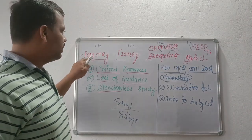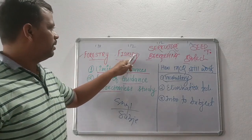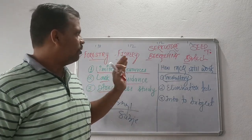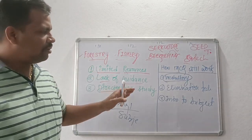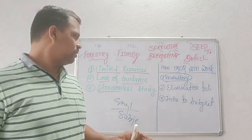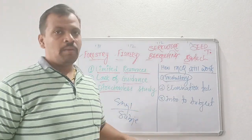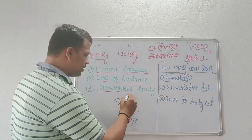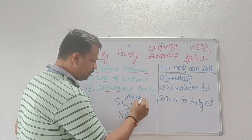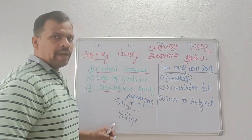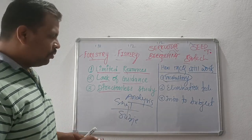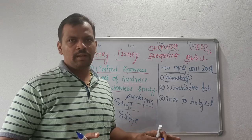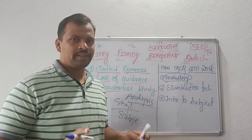An agriculture graduate doesn't know much about forestry or fishery, and likewise a forestry graduate doesn't know much about fishery. So if you solve multiple choice questions, your vocabulary starts to build up. When you solve MCQs, don't stop there — analyze that question, and you will gain decent knowledge and a good idea about that subject.